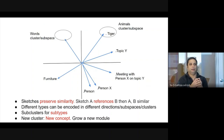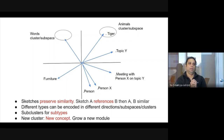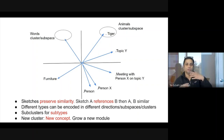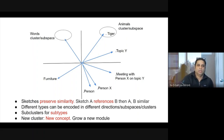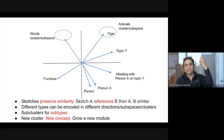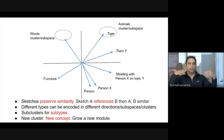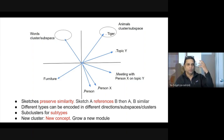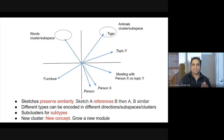This allows type encoding — you can think of each module's output as a type of object. All persons are one type and lie in a particular direction; all animals are another type, and so on. This also allows you to discover new concepts: when you see a new type of thing, it gives rise to points arising in an unseen region in the sketch space. Say you see tigers for the first time — in terms of previous-level modules, it produces sketches that tend to lie in a single subspace or cluster. When you see points in that cluster, you know it's time to form a new concept and grow a new module.